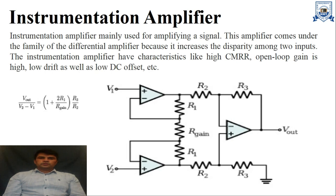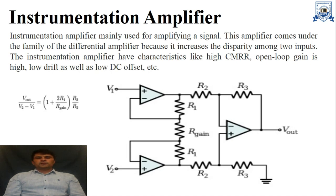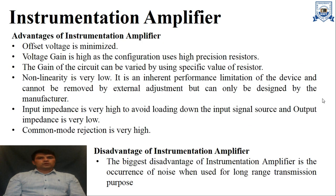The instrumentation amplifier has characteristics like high CMRR, high open loop gain, low drift, and low DC offset. Here is the gain formula of the instrumentation amplifier, and here is the circuit diagram. Some advantages of the instrumentation amplifier include minimized offset voltage and high voltage gain.